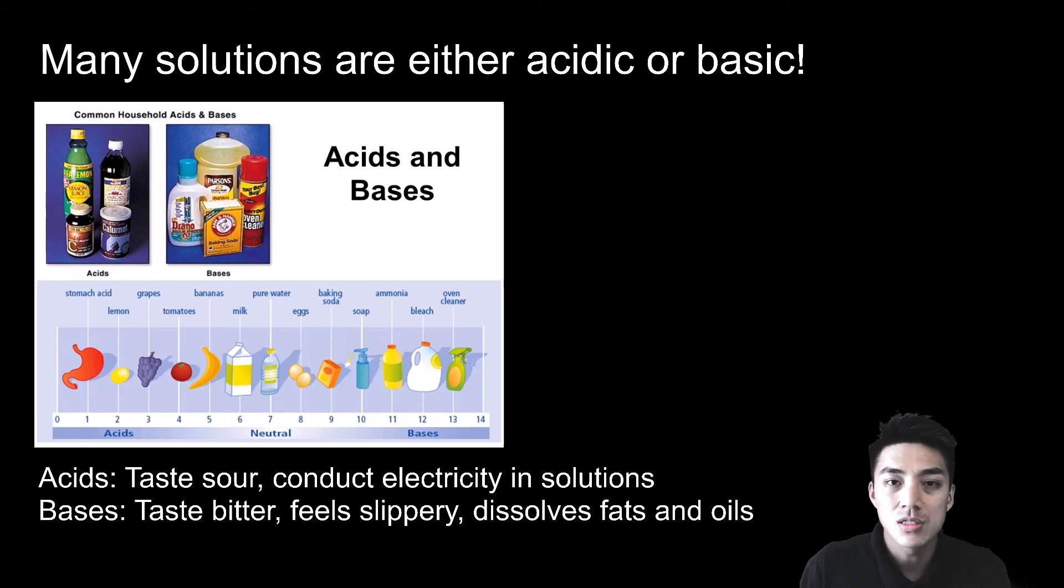But many solutions in your body which carry out vital important functions are either an acid or a base. An acid has a pH less than 7. They usually taste sour, but they also conduct electricity in solution. Bases, on the other hand, feel slippery. They taste bitter, but they're important in dissolving fats and oils in your cells.